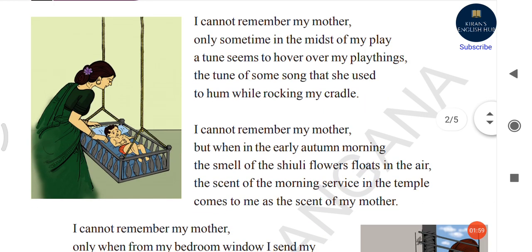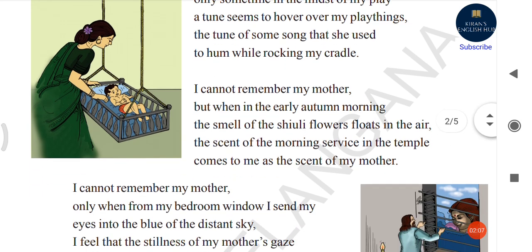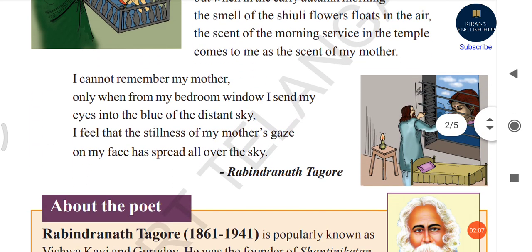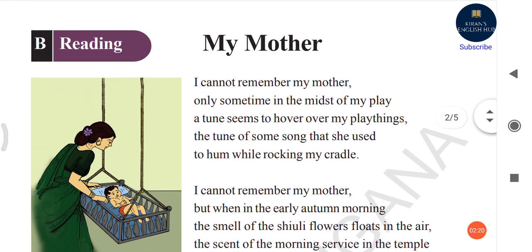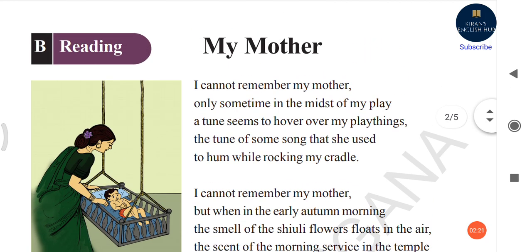Before going to the poem, you can just see on the screen, on the left side, a mother swinging the cradle of a baby — that is the poet. And at last, you can see the speaker in this poem imagining his mother's face in the sky, just looking through the window. Now, let us come to the first stanza.